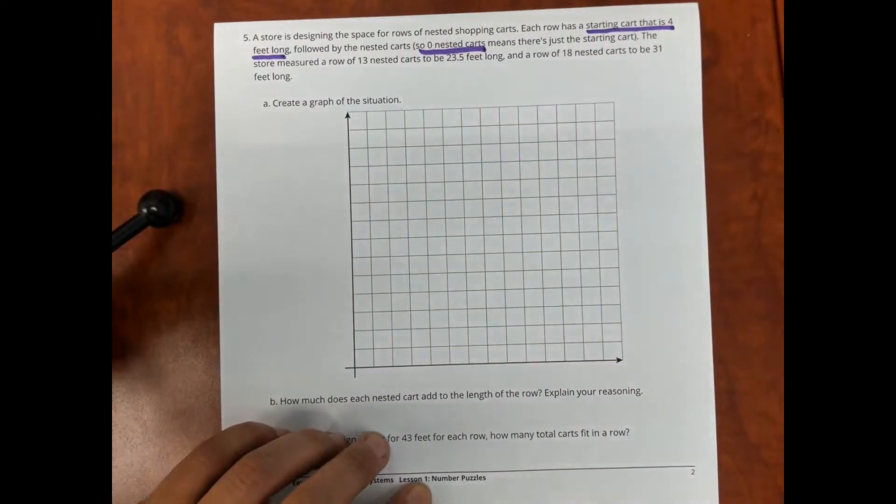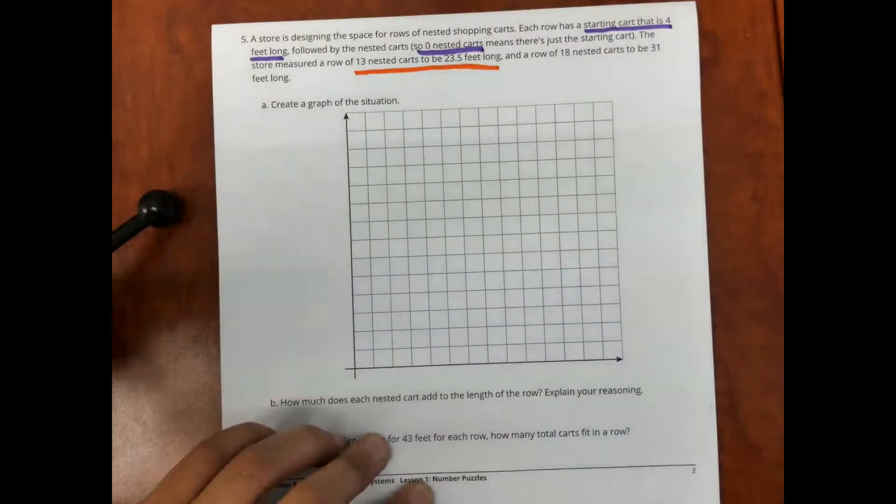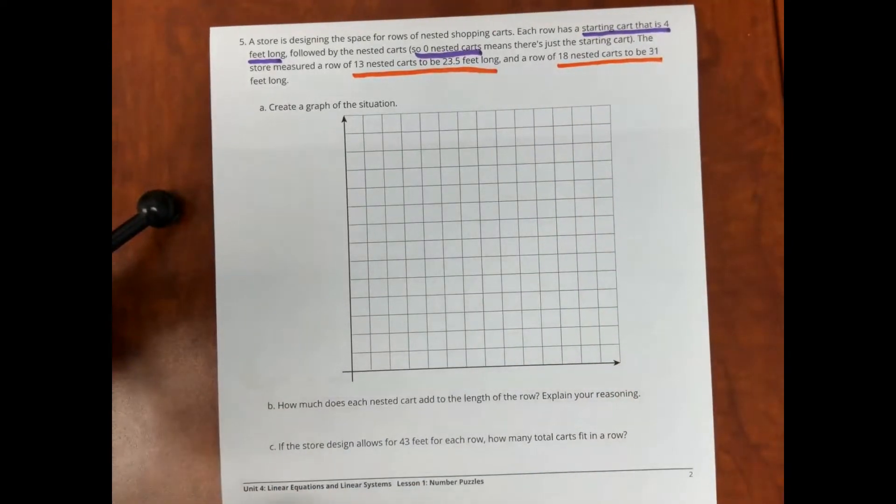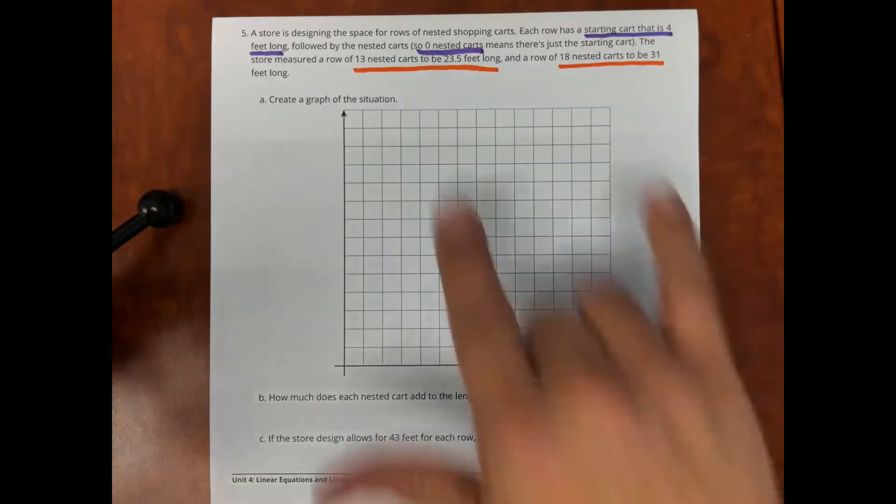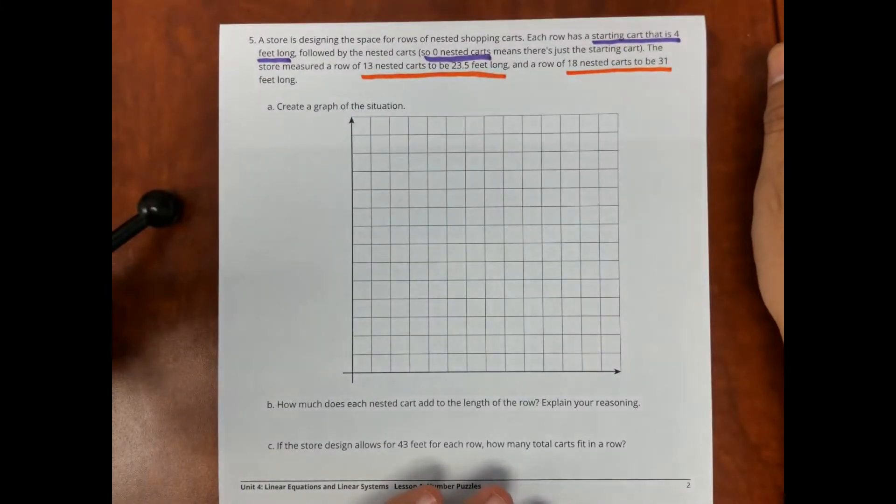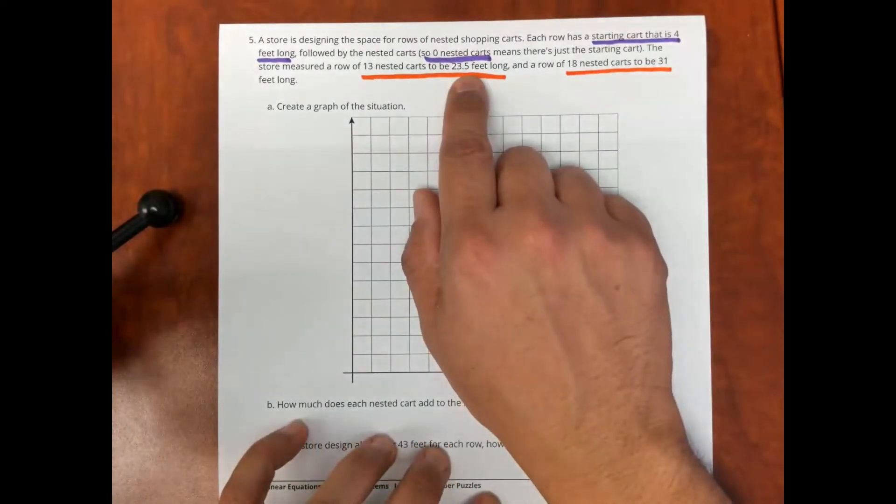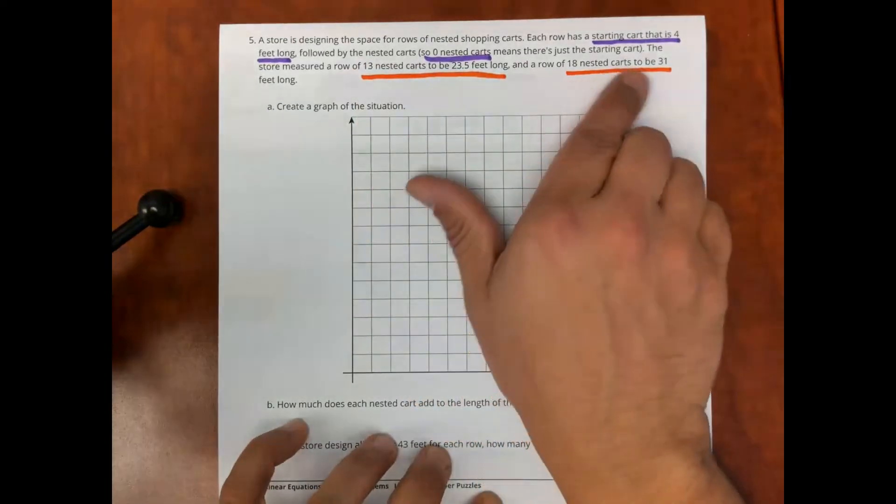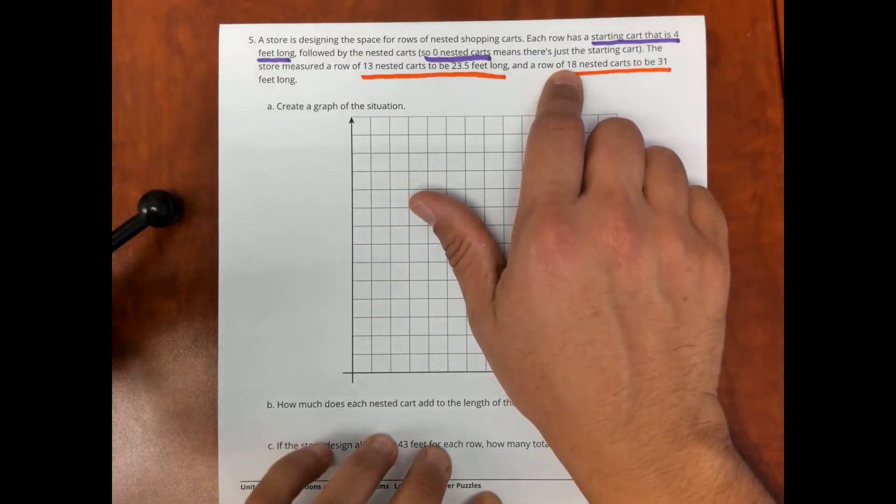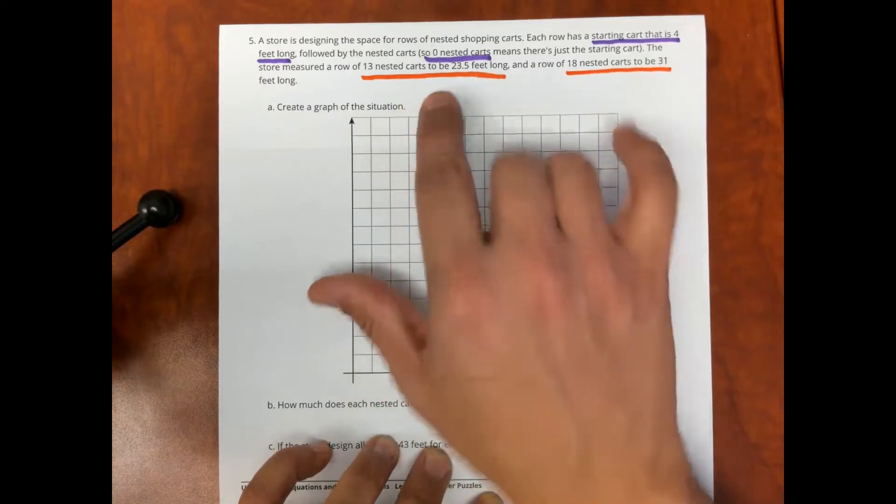Now the other part that we know is this: 13 carts is 23.5 feet, and 18 carts is 31 feet. Because of this, because of the starting cart, this is not proportional. The starting number is not 0, so it's not going to multiply. And if you were to divide 23.5 divided by 13 and 31 divided by 18, you're not going to get the same number, so we can't multiply. So, now what we want to do is graph the situation. We can take the numbers that we know here and graph it.